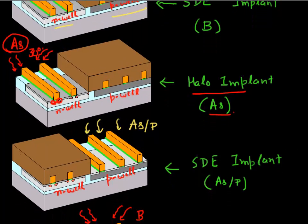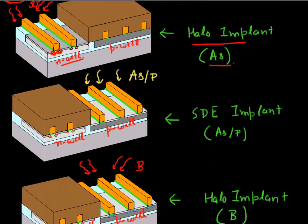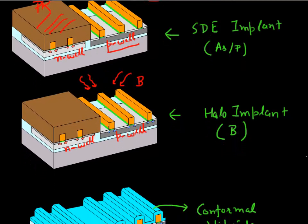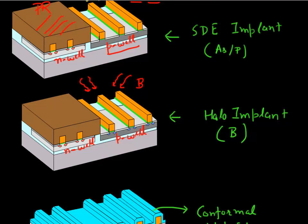After implanting the N-well, you cover the N-well with photoresist and now implant the P-well. First you form the source drain extension by implanting arsenic or phosphorus. Then to form the halo for this transistor, you implant boron at an angle, which forms the halo regions.